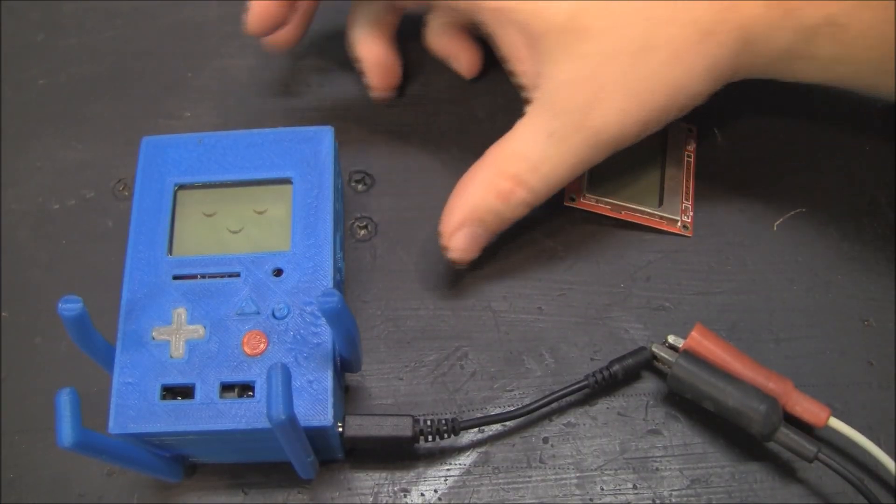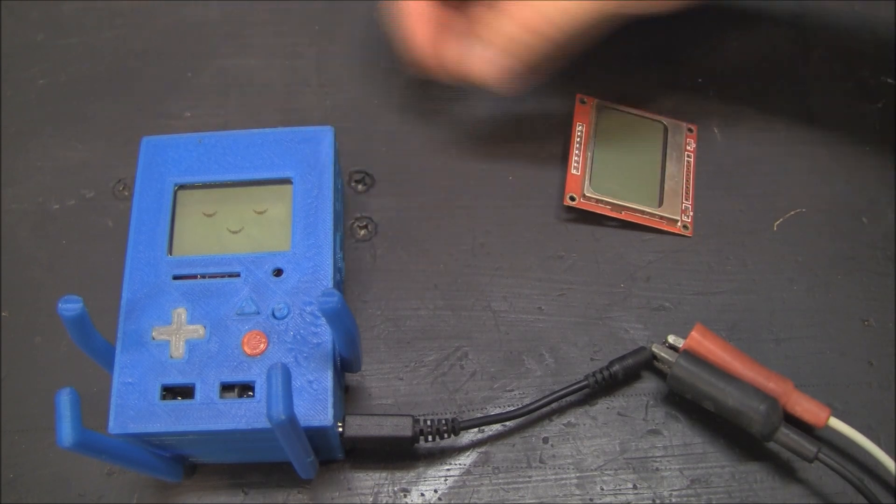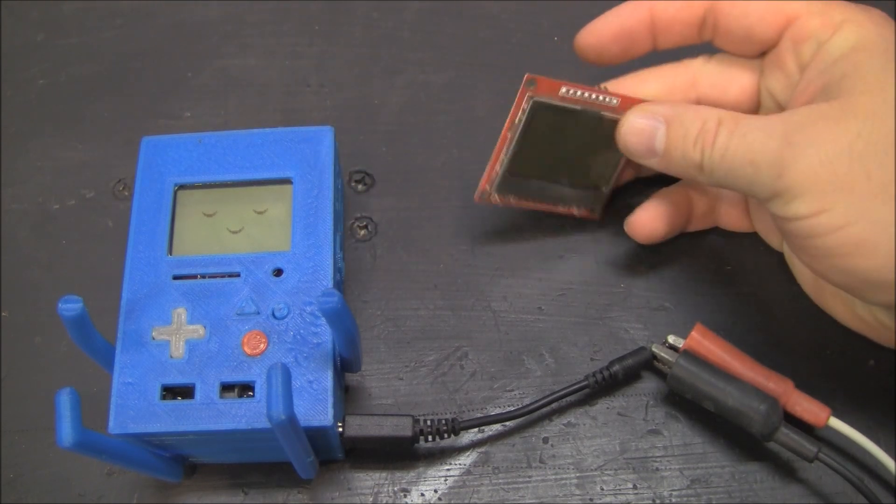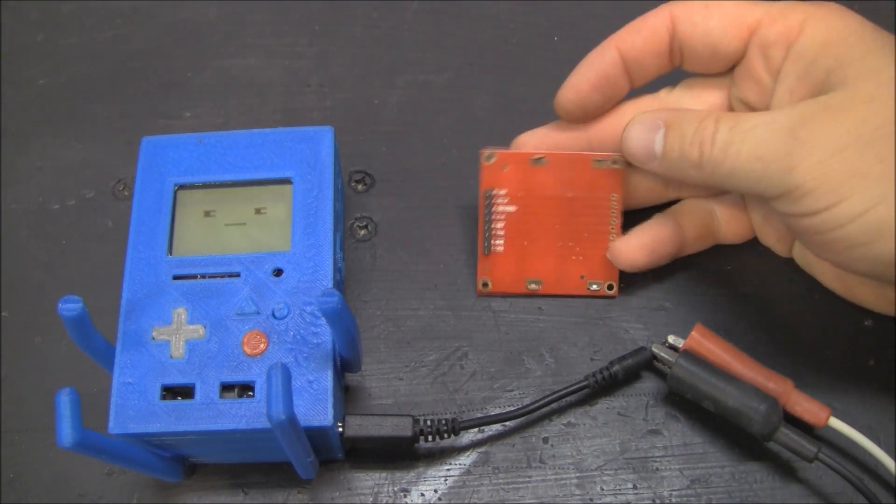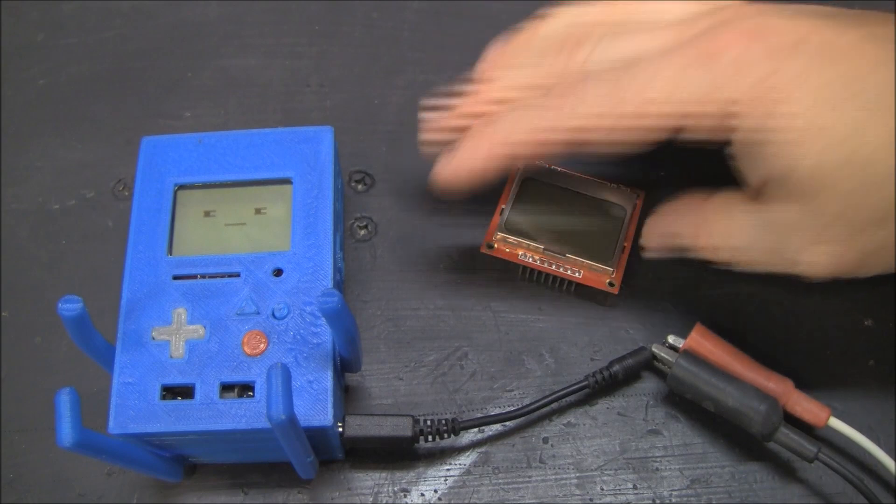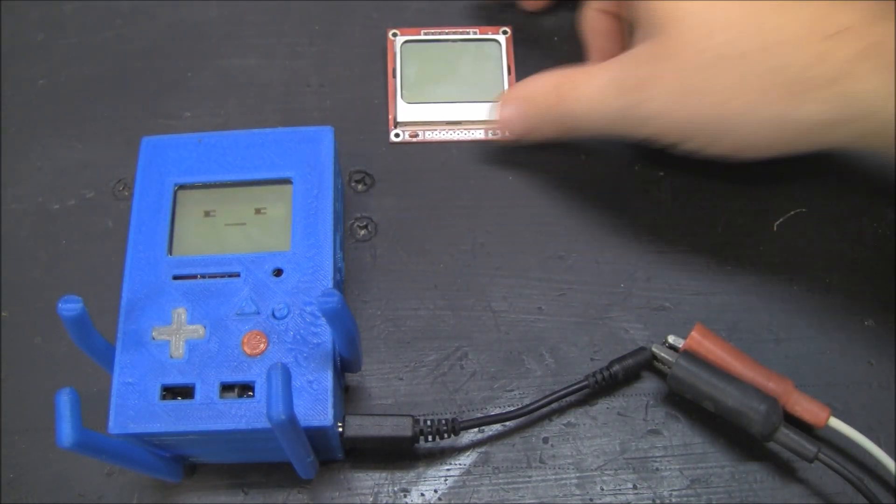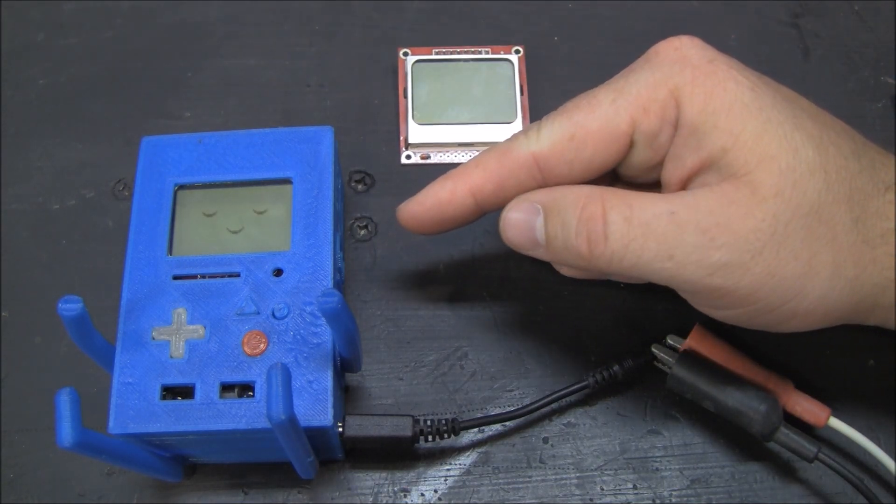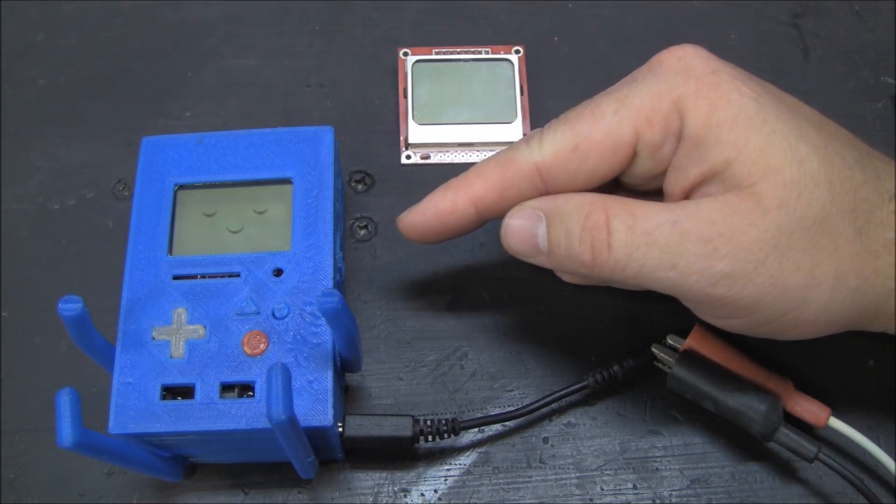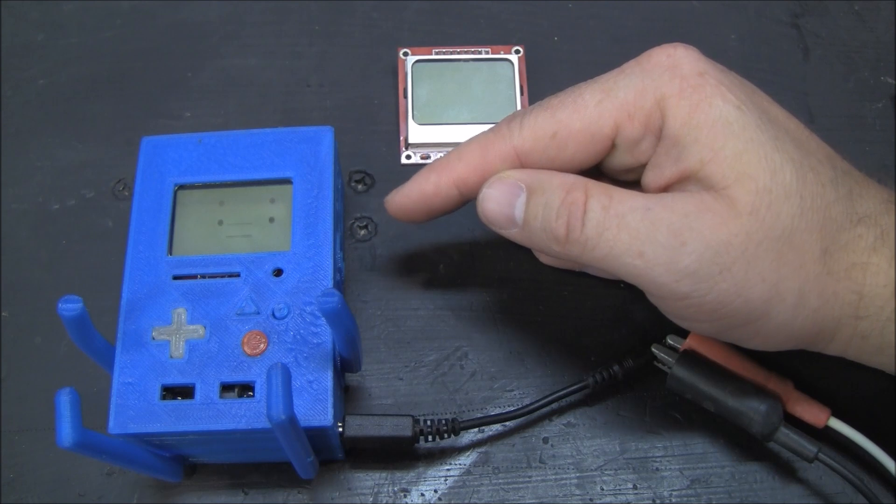So the main reason that I made a Beemo this size, it's pretty small, is because of the LCD screens I had. These are Nokia 3310 LCD screens. You can get them on just about anywhere, eBay, Adafruit. So 10 bucks, it's nice and affordable. But I will say that making a Beemo this small is definitely a challenge. I don't think I'm going to do another one this size.